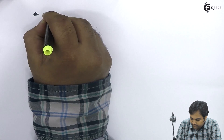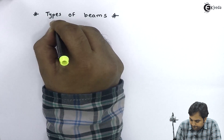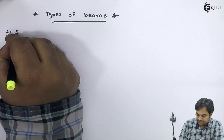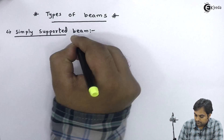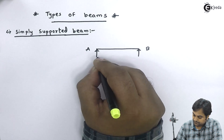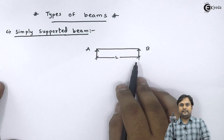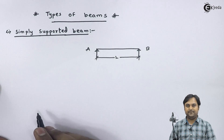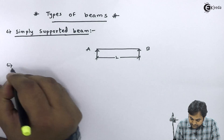First, I'll explain how many types of beams there are. The first one is the simply supported beam. Here we have the diagram — if we have a beam whose length is capital L and it is supported at its extreme ends, that kind of beam is called a simply supported beam. Next is the cantilever beam.